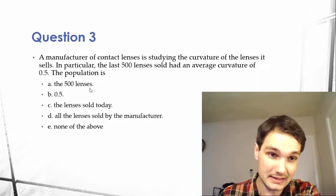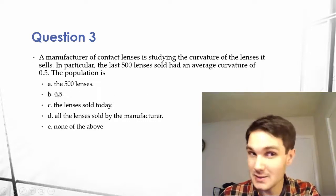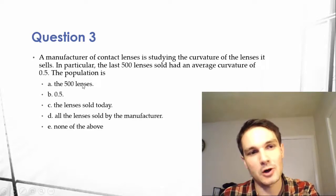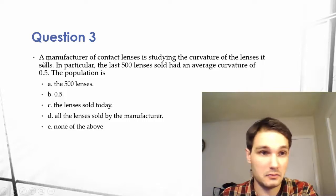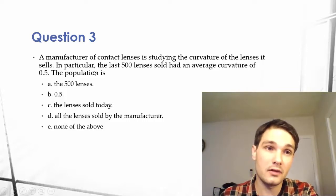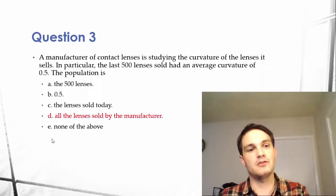So, we went over A. A was the sample. We went over B. That's the statistic regarding the sample. And C, it doesn't make sense because it's studying all of the lenses it sells. So D is the best answer here, as you can see this in red.